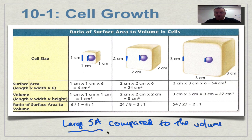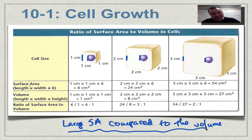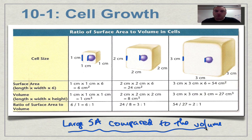Key concept: smaller cells have a bigger surface area to volume ratio. It seems odd to say 'smaller is bigger,' but we're talking about this ratio — and that is certainly the case. A small cell has a huge advantage over a large cell when it comes to moving materials in and out efficiently.